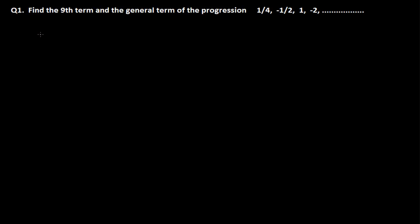Welcome back. In a previous video we learned the general term of the geometric progression. Here is a simple problem related to the general term of the geometric sequence. Find the ninth term and the general term of the progression: the first term is 1/4, the second term is -1/2, the third term is 1, and the fourth term is -2.